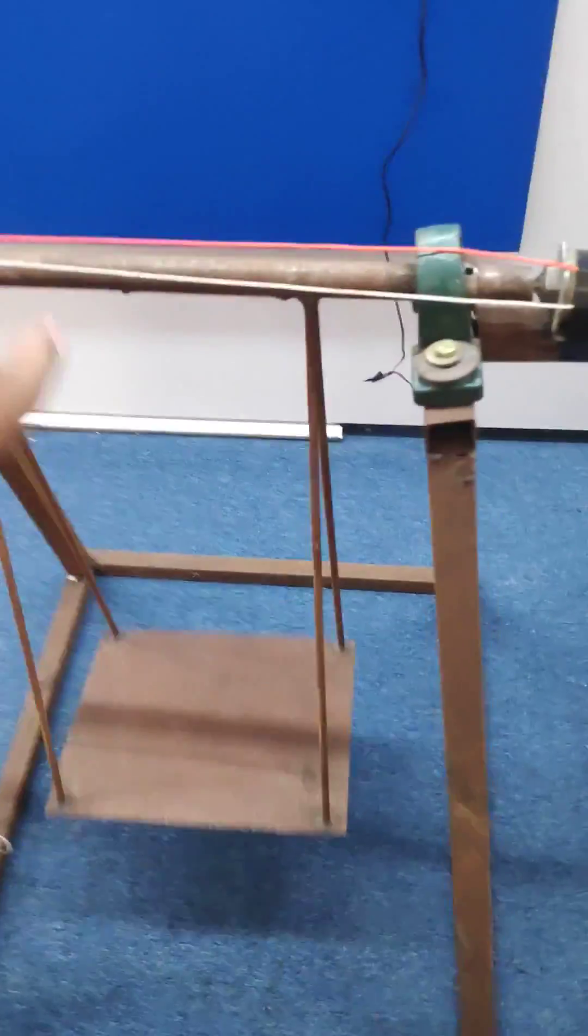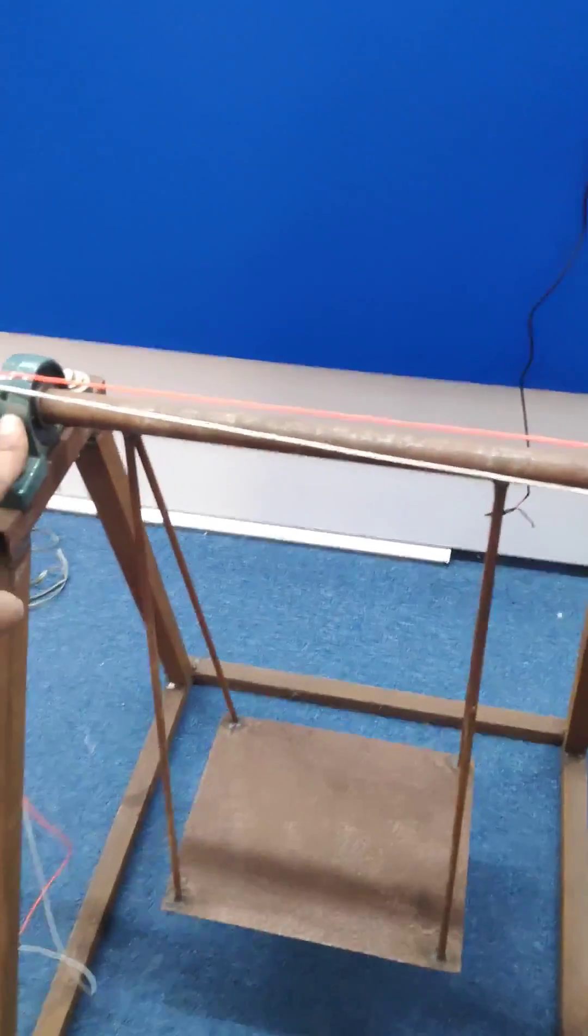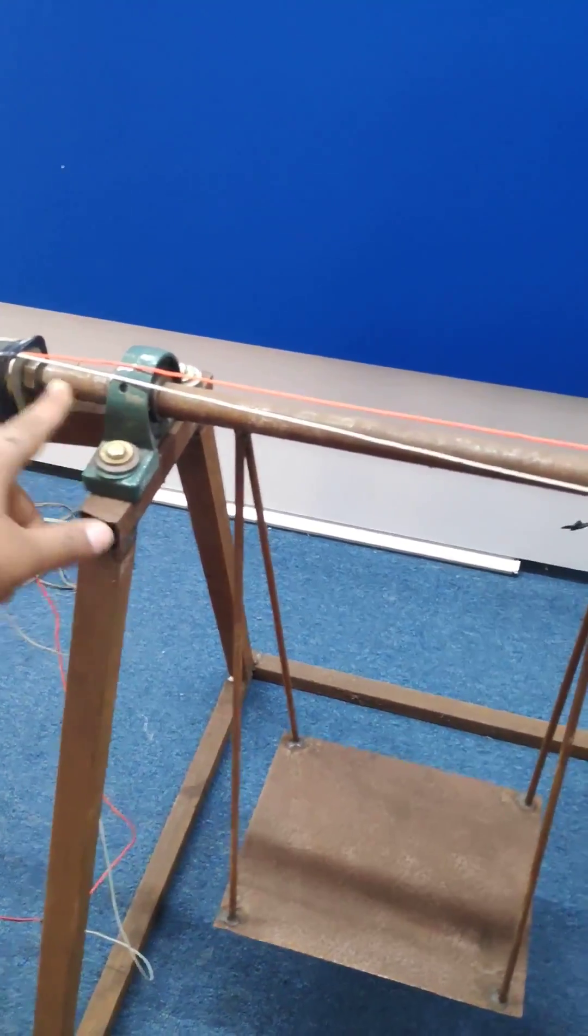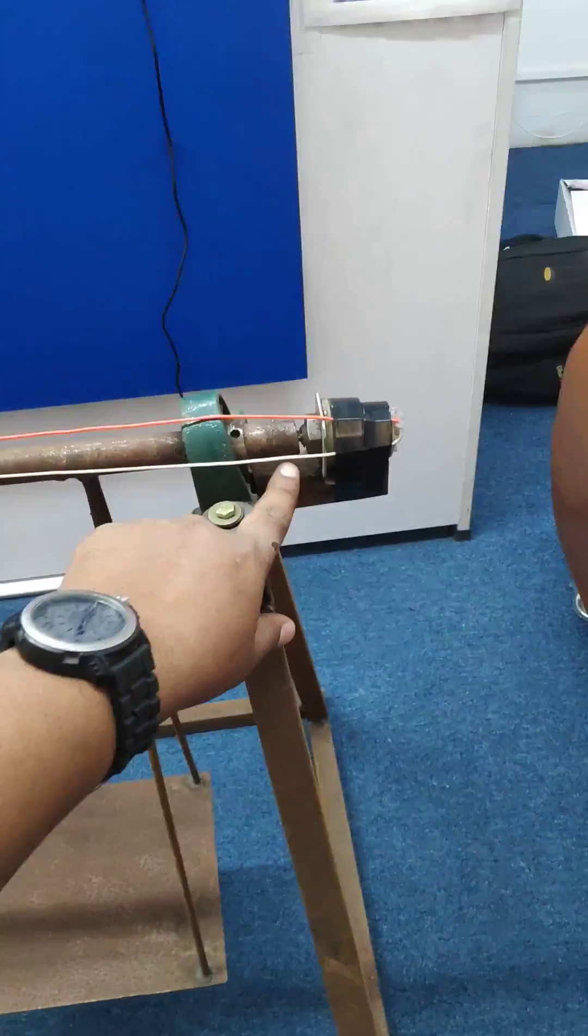Here we have used a 20mm diameter shaft rod connected to UCP bearings, and this consists of a 6mm hole on either side.